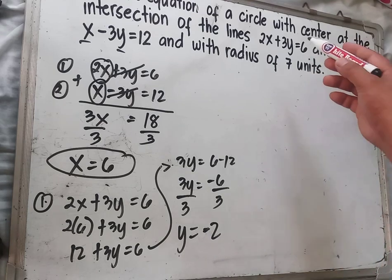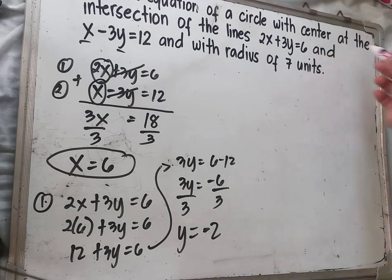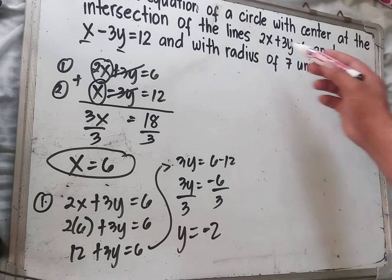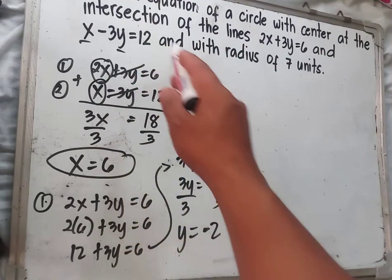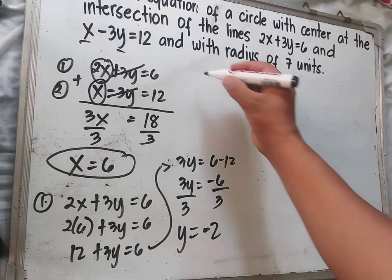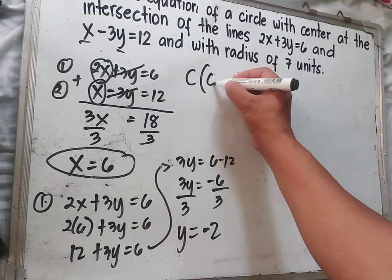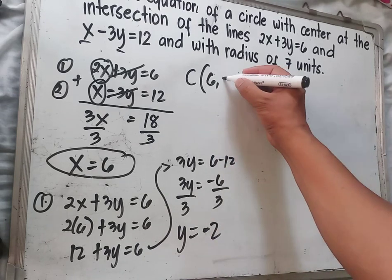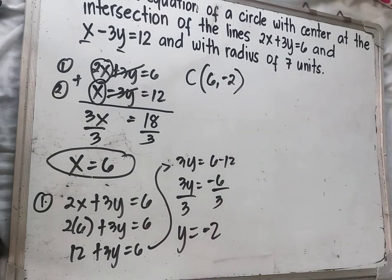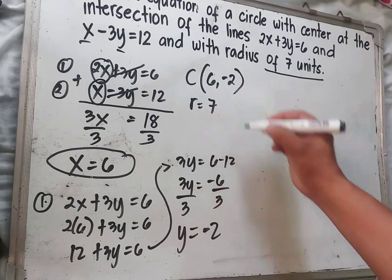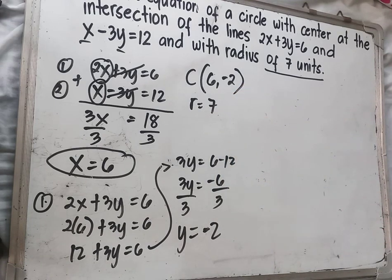So the center is at the intersection of 2x plus 3y equals 6 and x minus 3y equals 12. The value of x is 6 and y is negative 2, so the center is at (6, negative 2) and the radius is 7 units.